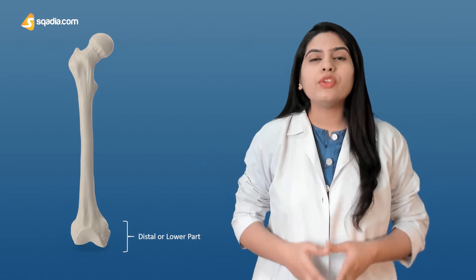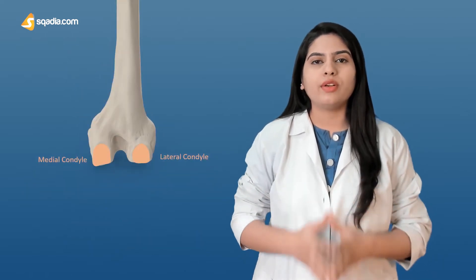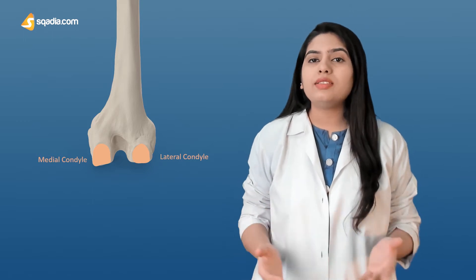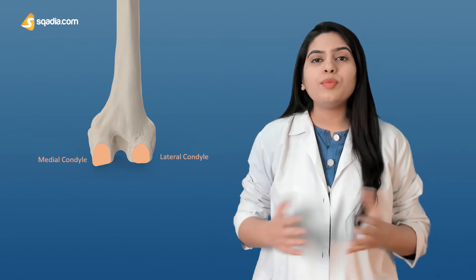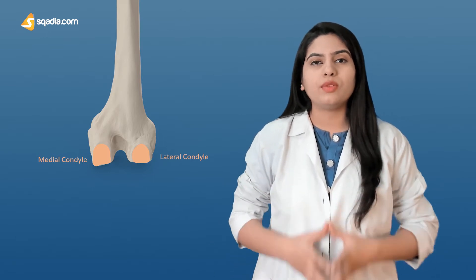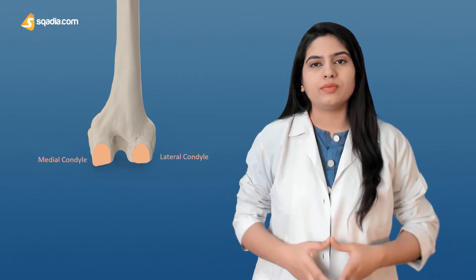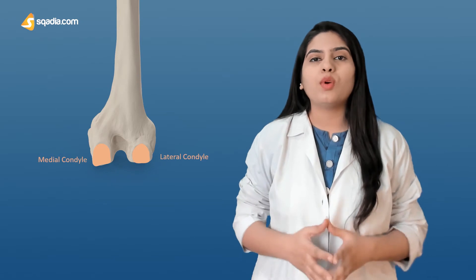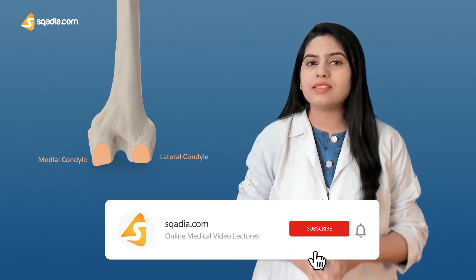Now learning about the third and last portion of the femur, the distal line, which is characterized by the presence of medial and lateral condyles. Condyles are one of the prominent features — they are the rounded projections which form the joint and are points of articulation with the tibia, which is a lower leg bone. A knee joint is formed when condyles articulate with the tibia and patella distally.